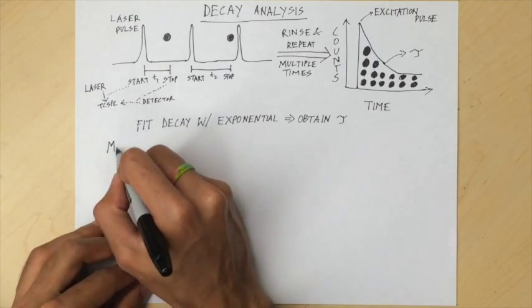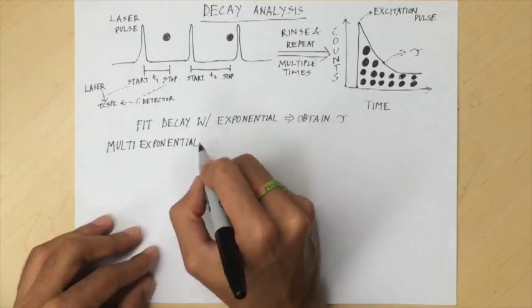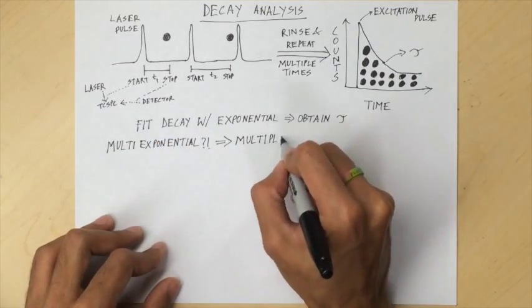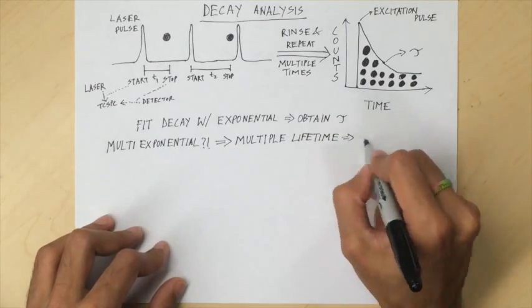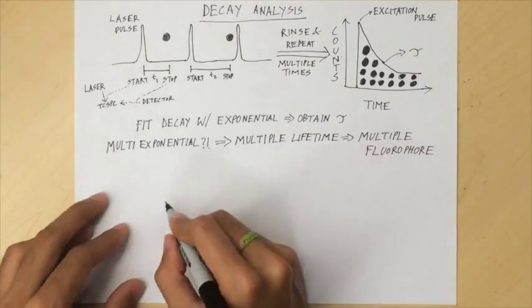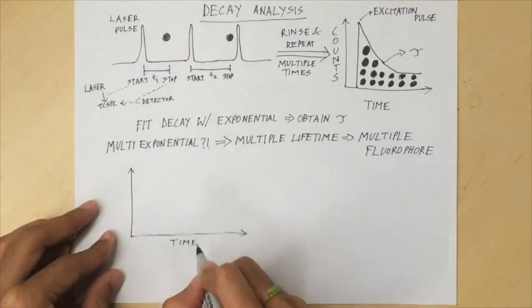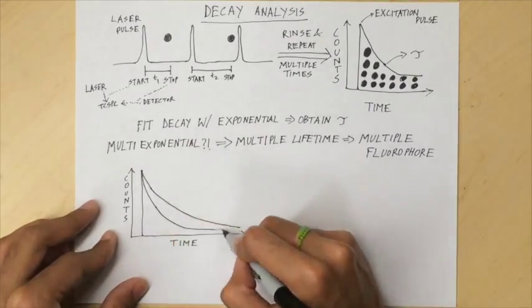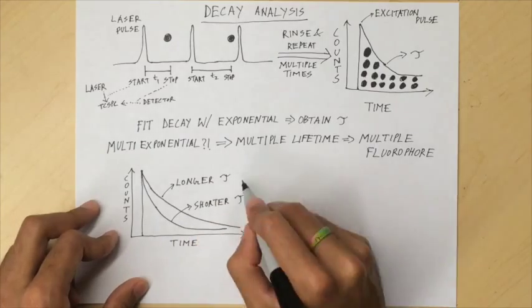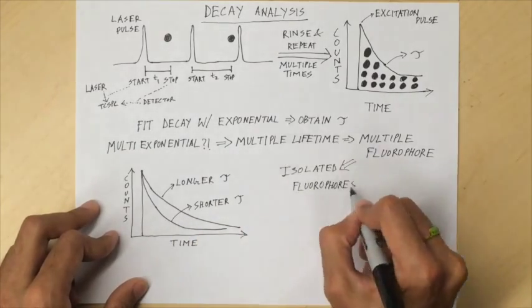A multi-exponential fit implies multiple lifetimes, which in turn indicates the possible presence of multiple fluorophores with different lifetimes. If those fluorophores are isolated and measured separately, then the resultant mono-exponential decays for each fluorophore would resemble the plot shown.